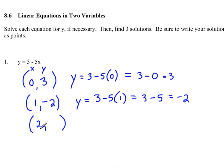Let's find one more point, and that would be when we substitute x is 2. So y equals 3 minus 5 times 2. Do the multiplication first, so that's 3 minus 10. Do the subtraction, you get negative 7, and write it as a point.